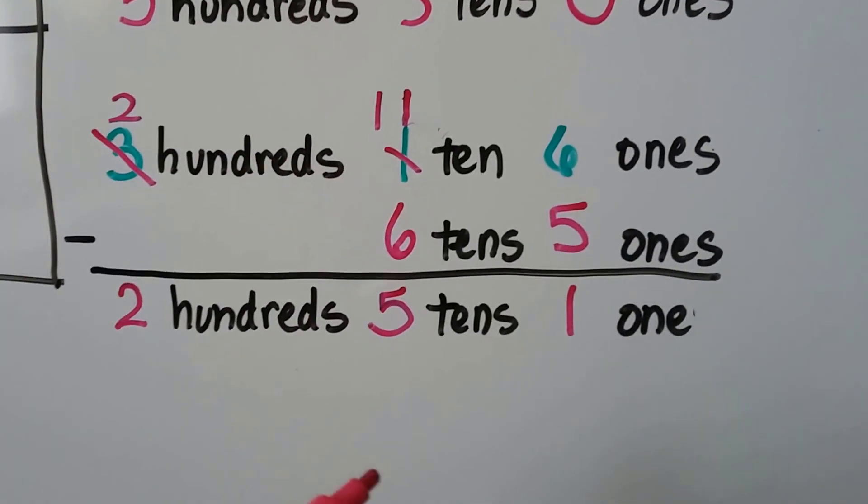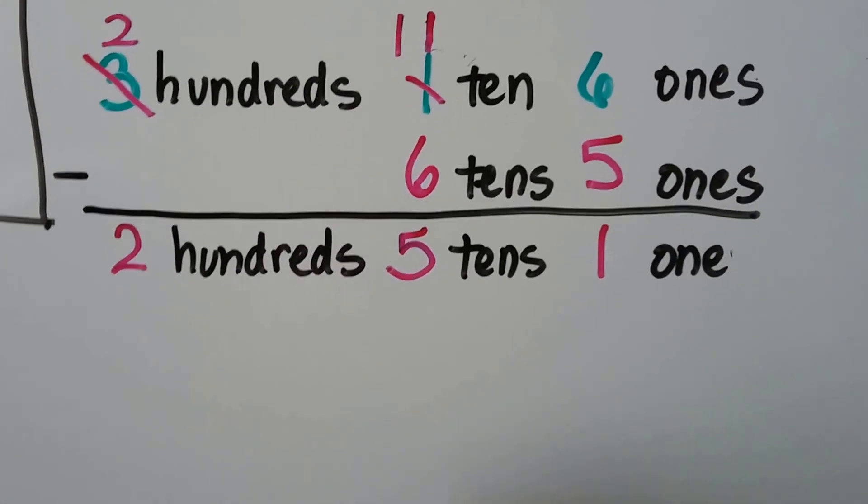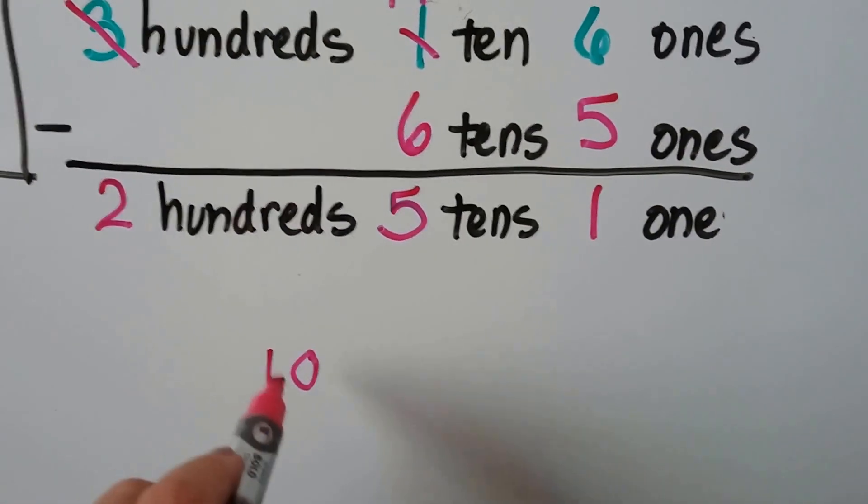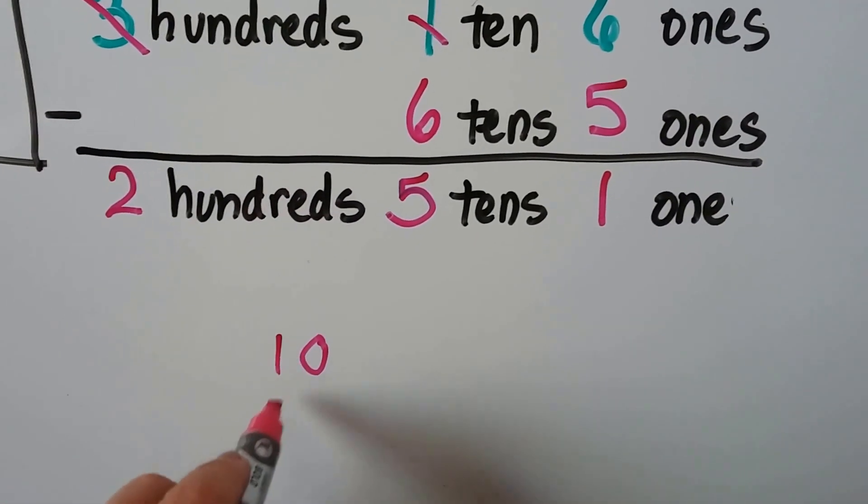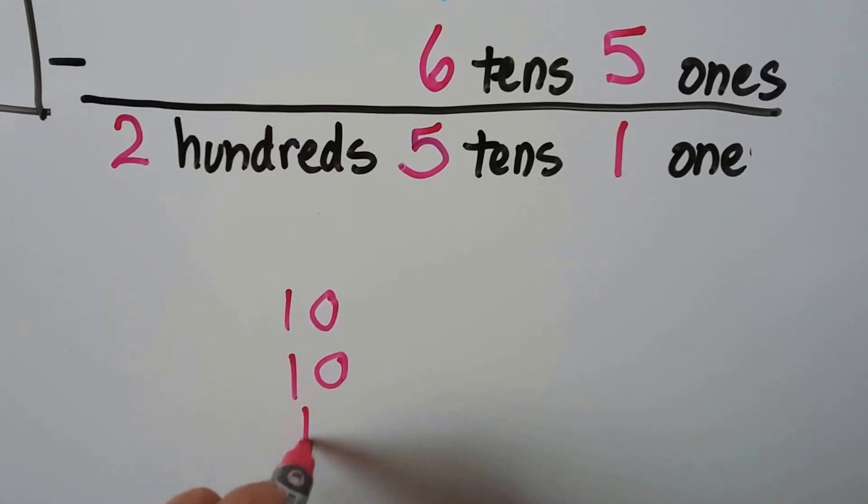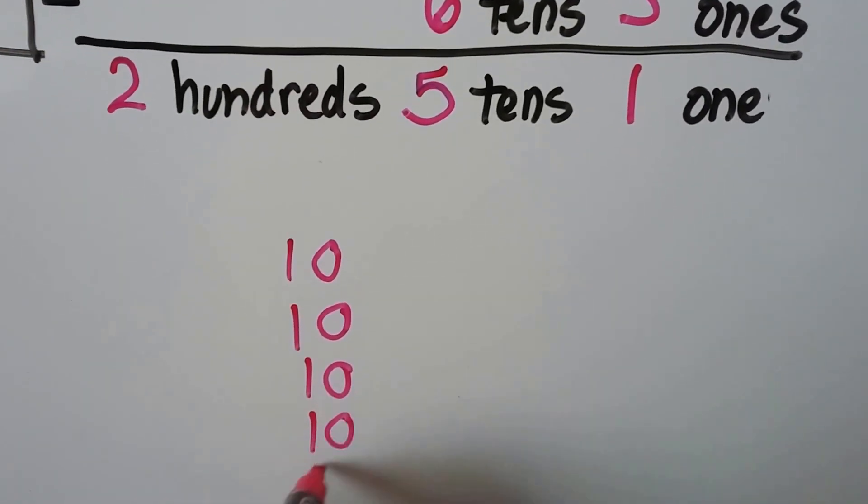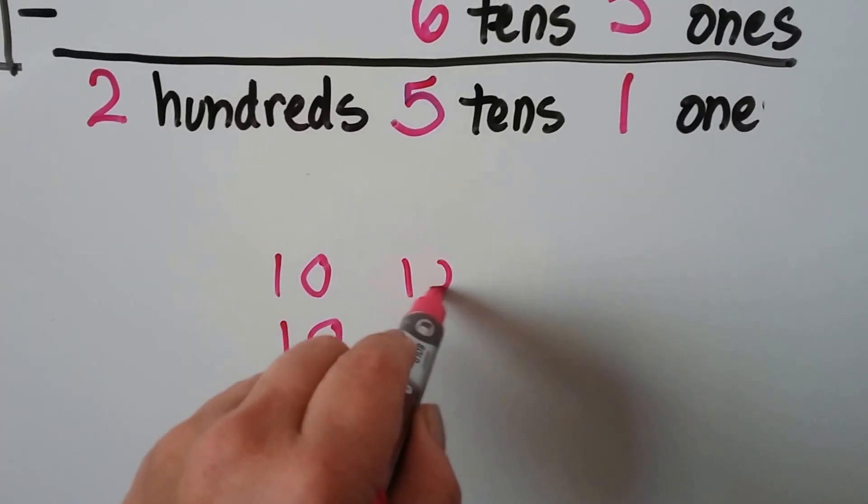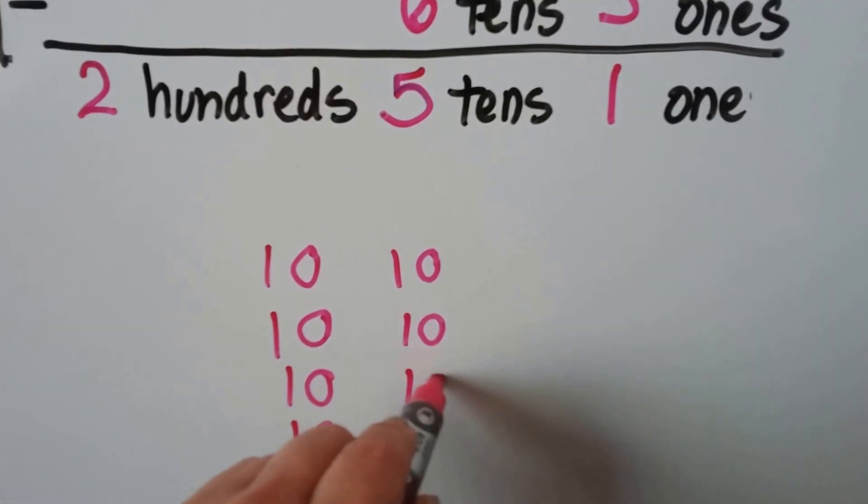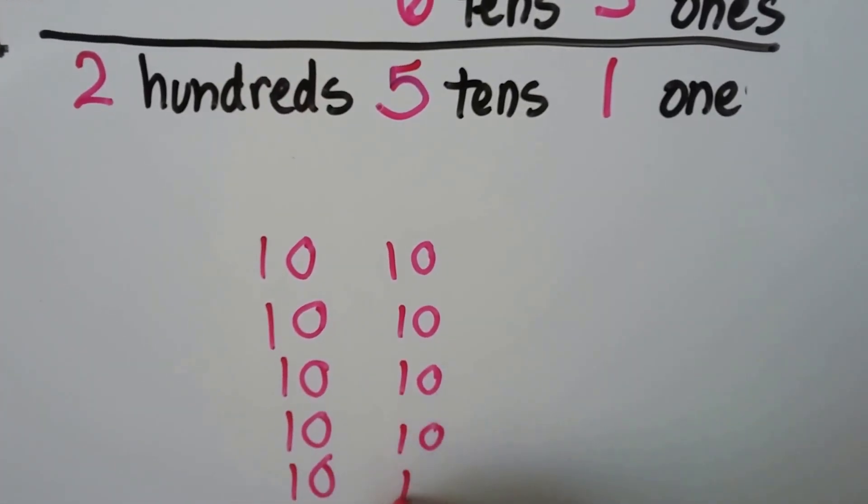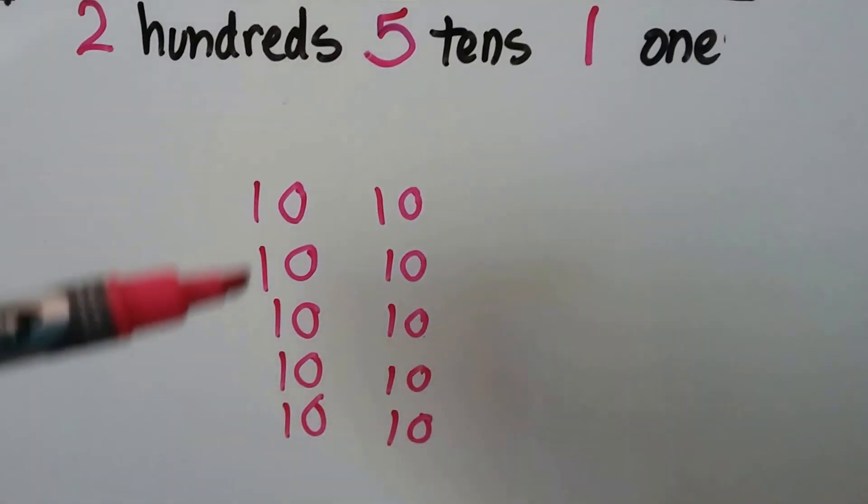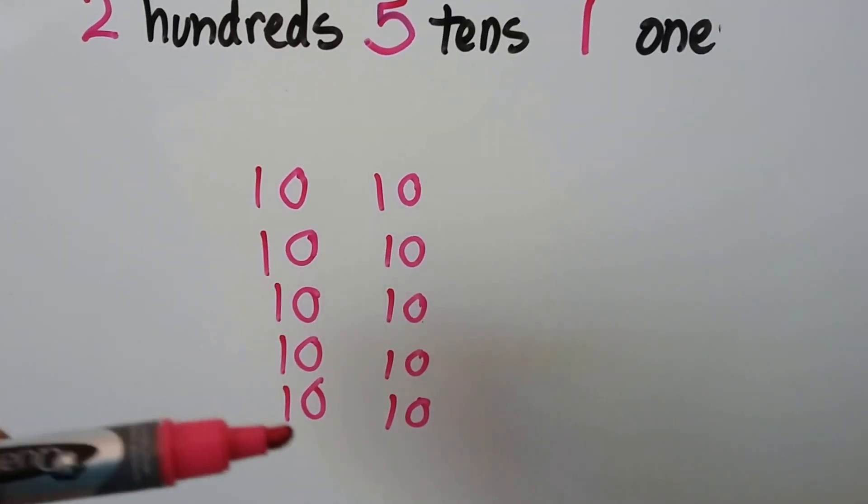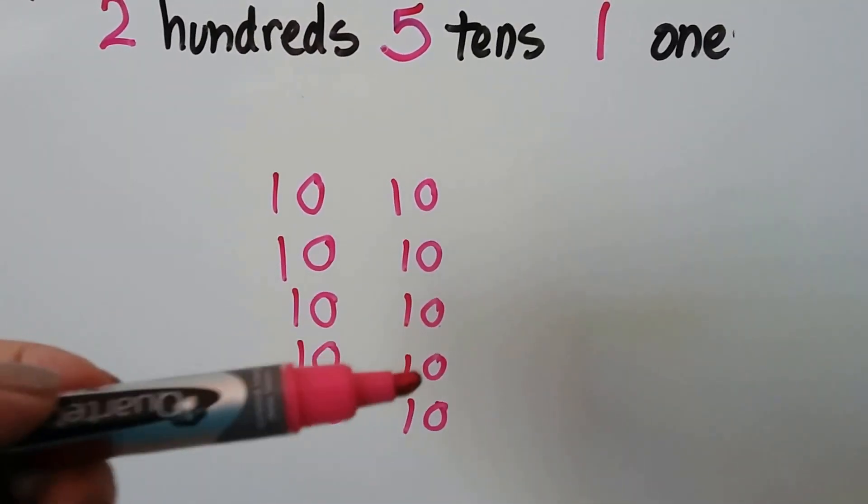Remember that there are 10 tens in 100. If we had 10 of these, if we did 10 of these, we'd have 100, wouldn't we? And we can count by tens. 10, 20, 30, 40, 50, 60, 70, 80, 90, 100.